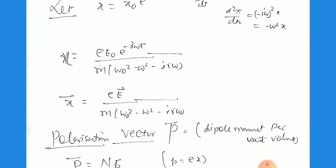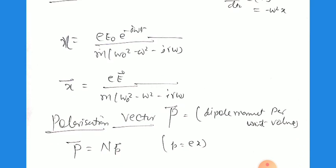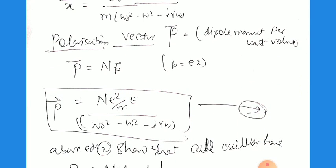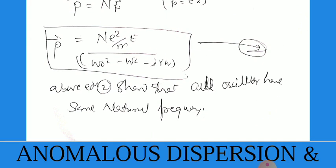The polarization vector, which is the dipole moment per unit volume, can be written as P = n·p, where n is the total number of molecules per unit volume, P is the polarization vector, and p is the dipole moment. So P = ne²E / [m(ω₀² − ω² − iγω)], assuming all oscillators have the same natural frequency ω₀.